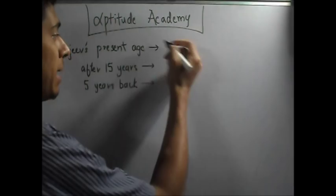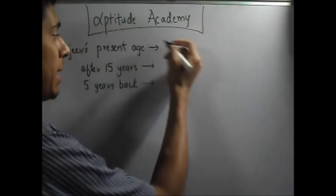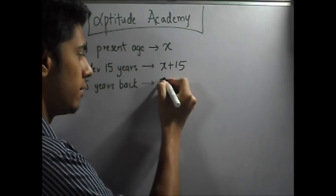Let it be x. After 15 years, that's in the future, so x plus 15. Five years back is in the past, so x minus 5. Now the problem says that Rajiv's age after 15 years is five times his age five years back. So it's a simple equation. Let's solve it.